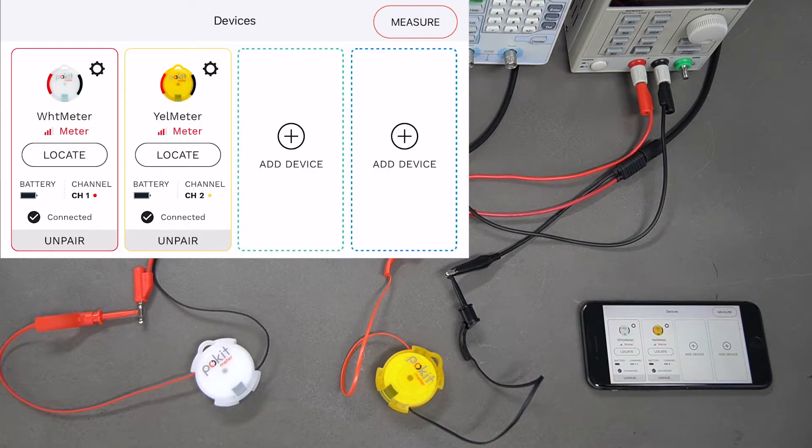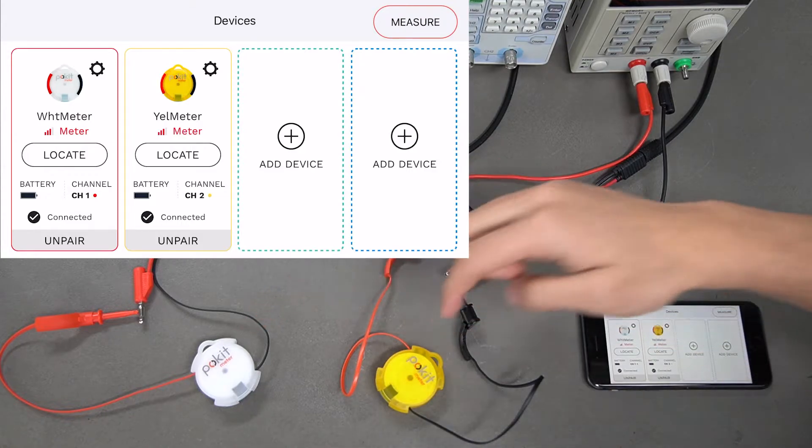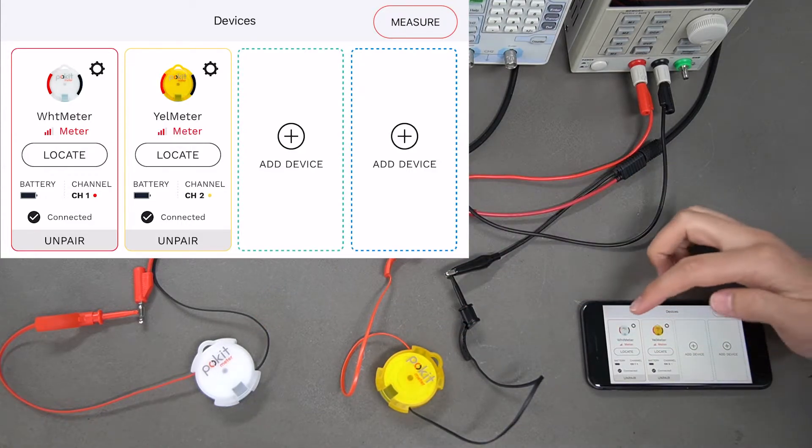In today's user guide, we'll be taking a look at how to measure voltage within Pocket Meter's multimeter function. We've got ourselves a white and a yellow pocket meter set up here, and you can see them in the devices screen.